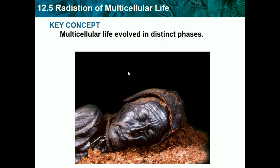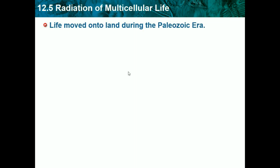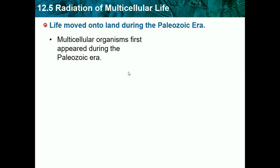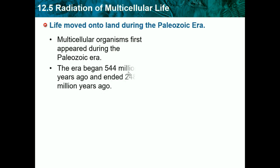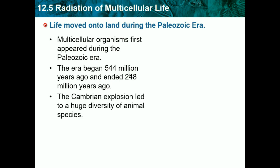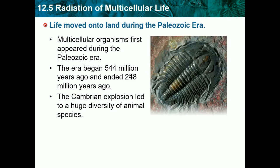Multicellular life evolved into distinct phases. Life moved onto land during the Paleozoic era. Multicellular organisms first appeared during the Paleozoic era — the era began about 541 million years ago and ended 248 million years ago. The Cambrian explosion led to a huge diversity of animals — it was basically a time where a bunch of animals just started becoming new species and we had a burst of diversity.